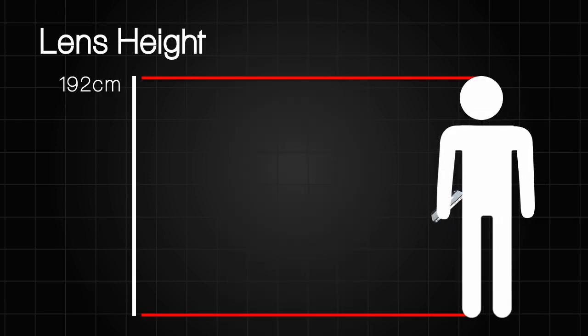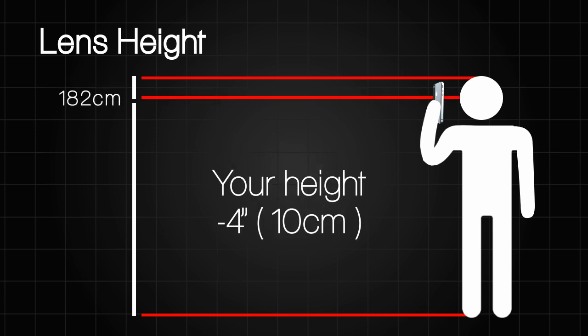For lens height, enter the approximate distance from the ground that you'll be holding your phone when making measurements. Based on how most users hold their phones, we suggest that you enter your own height minus 4 inches, or 10 centimeters.